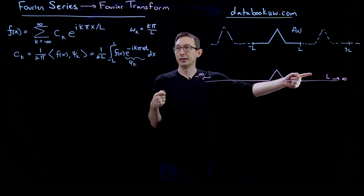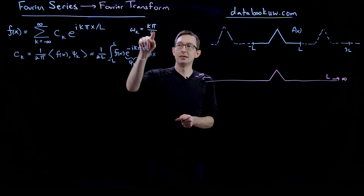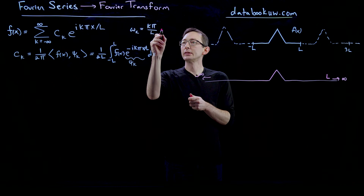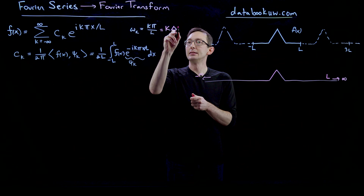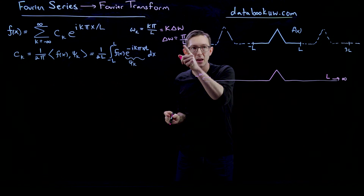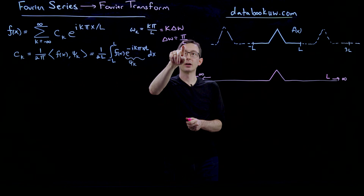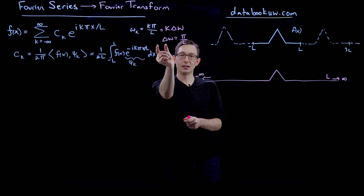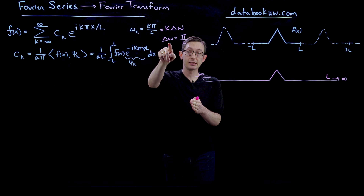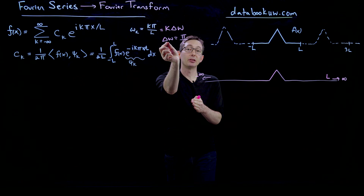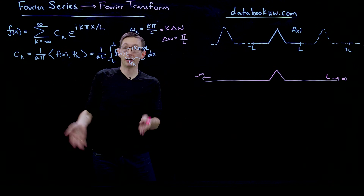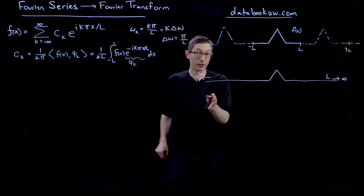When we take L goes to infinity, the frequency ω_k = kπ/L equals k·Δω, where Δω = π/L. As we take the limit L→∞, Δω goes to zero, so the frequency resolution becomes infinitesimally small and Δω becomes dω. This sum is then going to become a Riemann integral — that's what we're going to do right now.